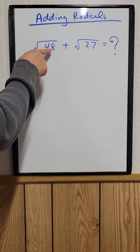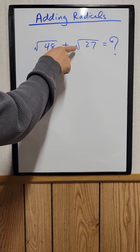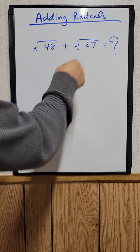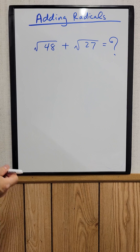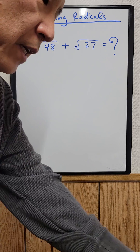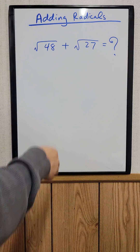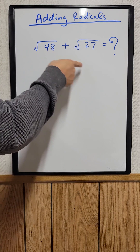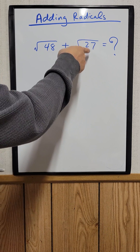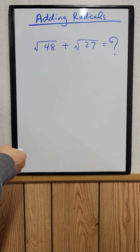Let's try to add the square root of 48 plus the square root of 27. But before we can do anything, we need to find all the factors for 48 and all the factors for 27.